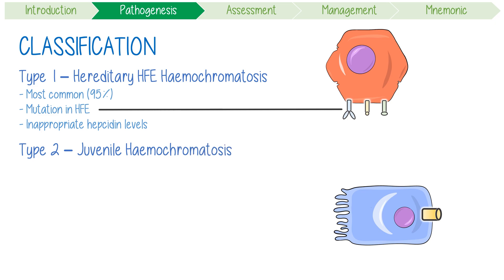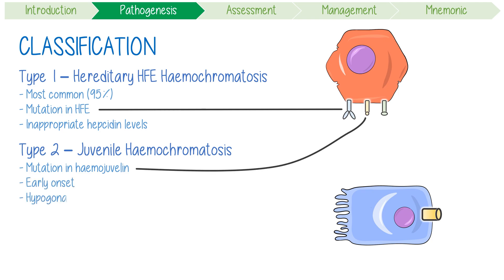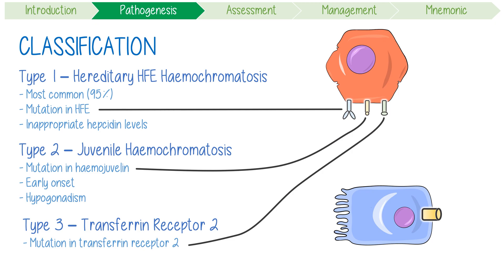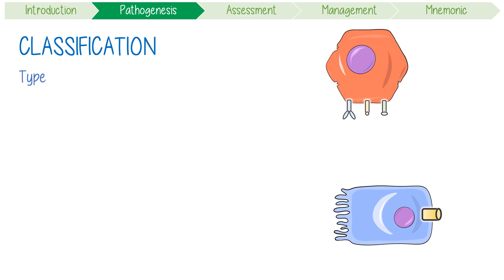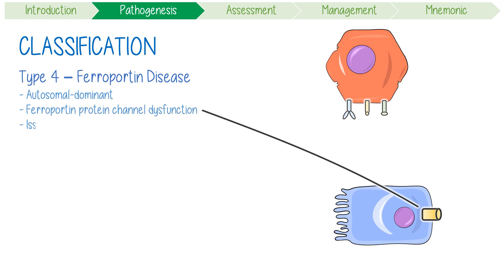Type 2, or juvenile hemochromatosis, results from a mutation in the hemojuvelin gene. It has an earlier onset and is characterized by hypogonadism and cardiomyopathy. Type 3, or transferrin receptor 2 hemochromatosis, is due to a mutation in the transferrin receptor 2 gene and affects middle-aged and young adults, resembling type 1. Finally, type 4, or ferroportin disease, is distinct as it's an autosomal dominant disorder resulting in issues with the ferroportin channel — meaning it's an issue with enterocytes, not hepatocytes like the other diseases.